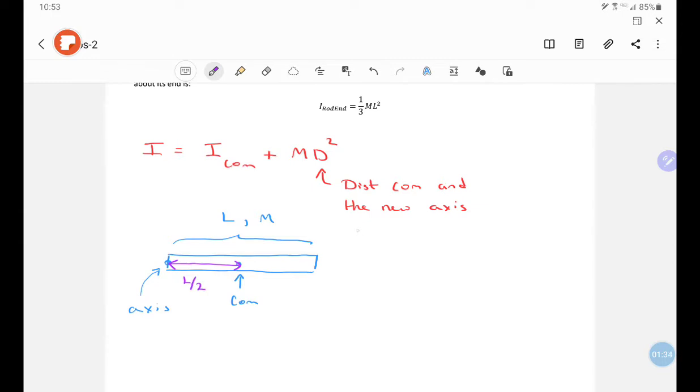And I know that the moment of inertia for a rod about its center of mass is 1/12 ml squared, so this distance l over 2 is d in my parallel axis theorem.